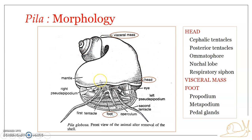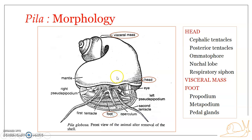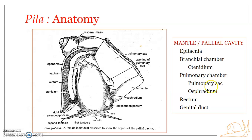The visceral mass or visceral hump is the major part of the body. It is spirally coiled due to torsion and is an asymmetrical part of the body. It contains and encloses all the internal organs. This part remains completely within the shell and does not project out through the shell mouth.